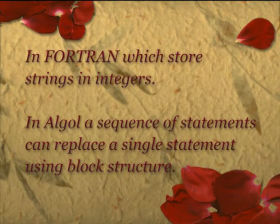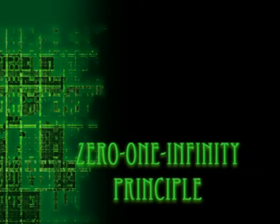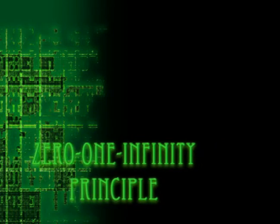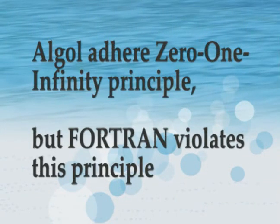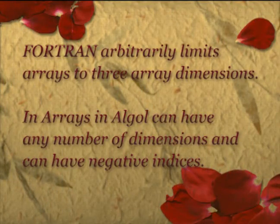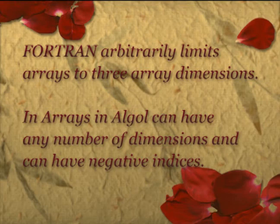The regularity principle states: regular rules without exceptions are easy to learn, use, describe, and implement. ALGOL adheres to the regularity principle but Fortran violates it — for example, Fortran stores strings in integers. In ALGOL, a sequence of statements can replace a single statement using block structure. The zero-one-infinity principle states: the only reasonable numbers in a programming language design are 0, 1, and infinity. ALGOL adheres to this principle but Fortran violates it — Fortran arbitrarily limits arrays to three dimensions, while arrays in ALGOL can have any number of dimensions and can have negative indices.